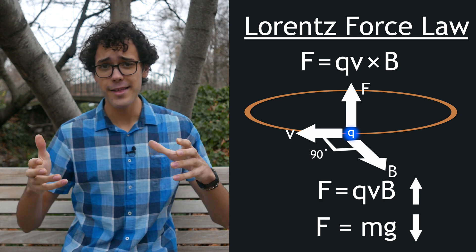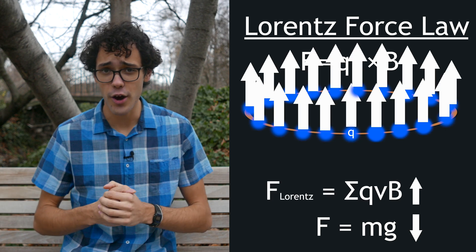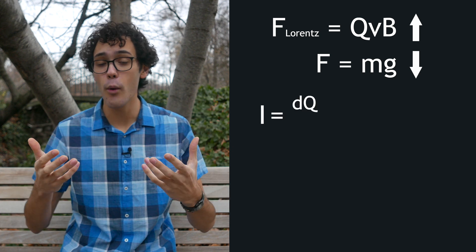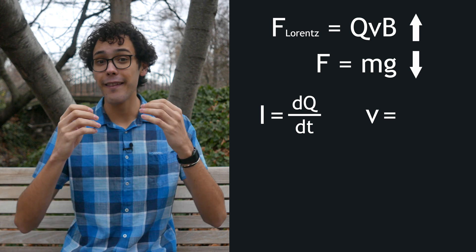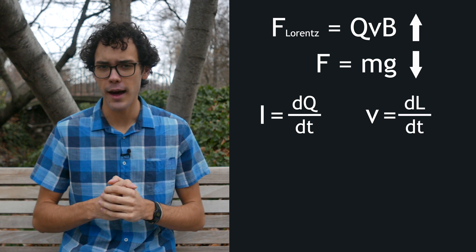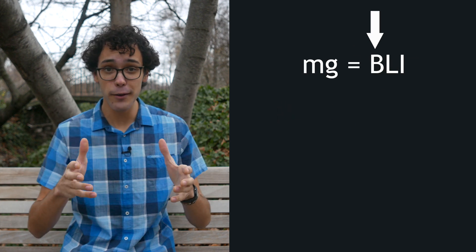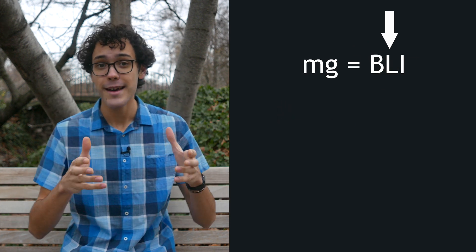To find the total force, we can sum up the force from each individual charge in the loop. The current, i, is the amount of charge that moves past a point per unit time. And velocity, v, is the length that charge moves per unit time. So rearranging, we can get mass times gravity equals magnetic field strength times the length of the wire times current.